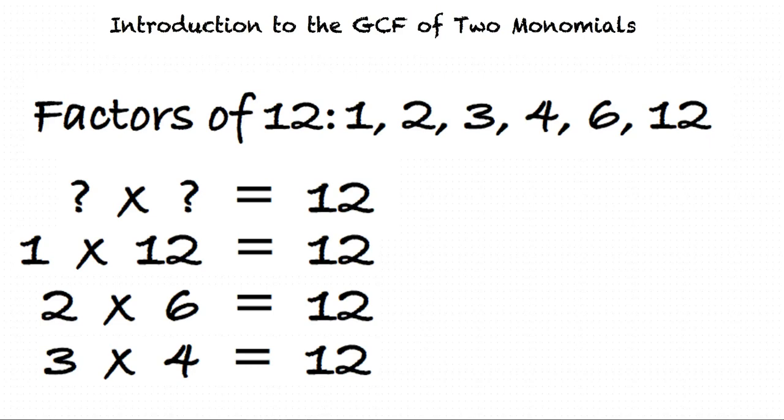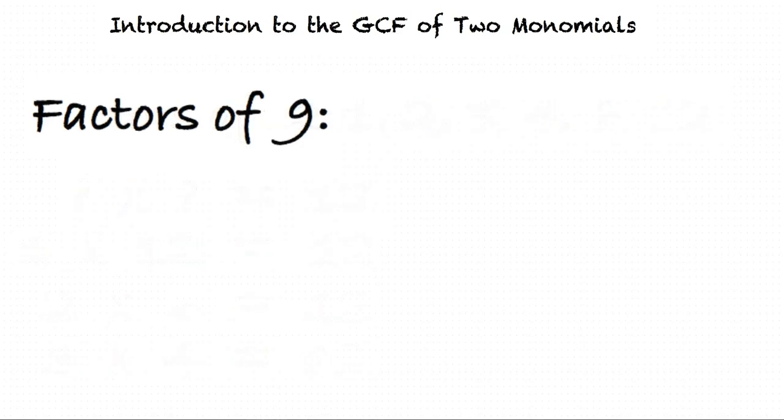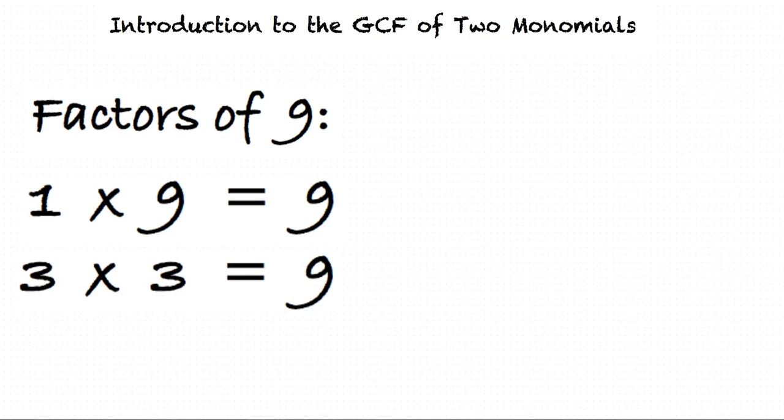Now, let's find all the factors of 9. Okay, so 1 times 9 equals 9, and 3 times 3 equals 9. That's right. So, our factors of 9 are 1, 3, and 9.